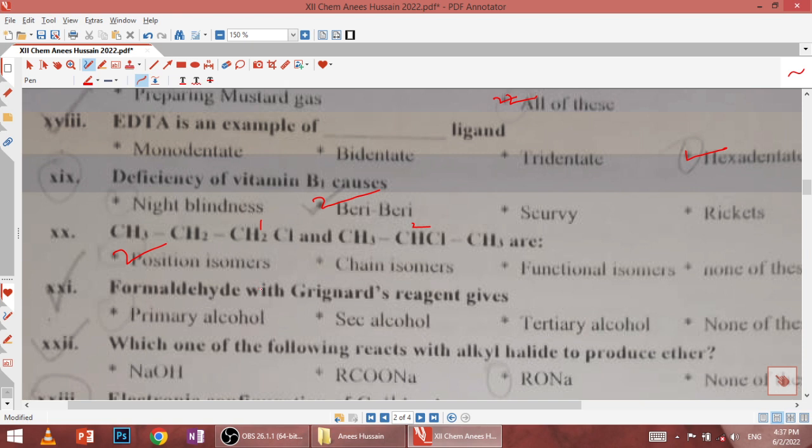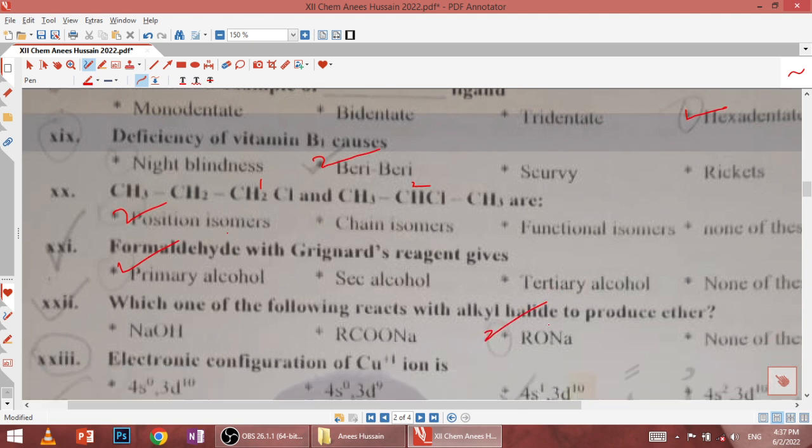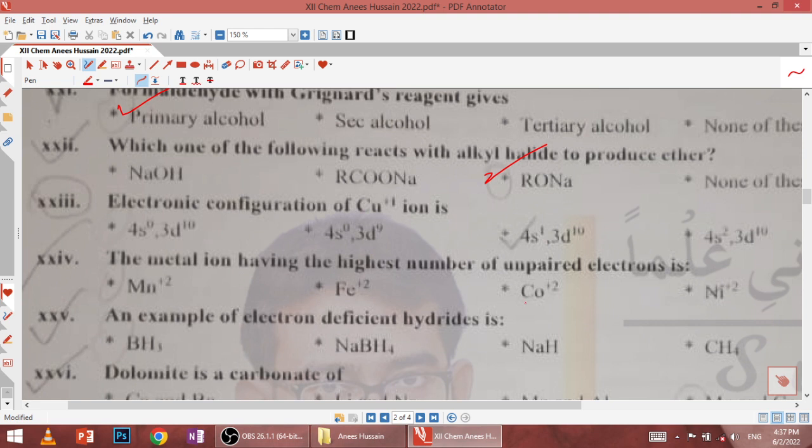Twenty-first, formaldehyde with Grignard reagent gives primary alcohol. Twenty-second, which of the following reacts with alkyl halide to produce ether? Sodium alkoxide reaction with RX will directly give ether with general formula R-O-R plus NaX. Twenty-third, electronic configuration of Cu+1 is 4s0 3d10, this is the correct answer.